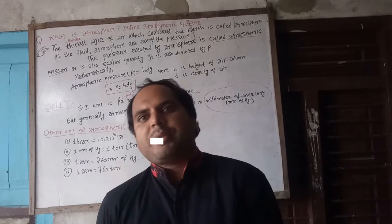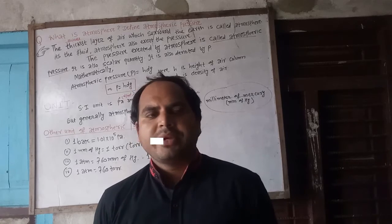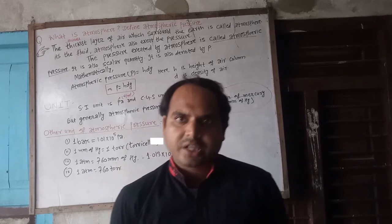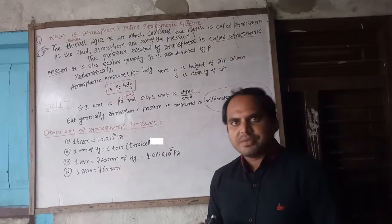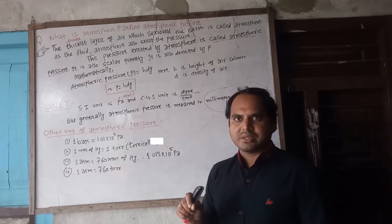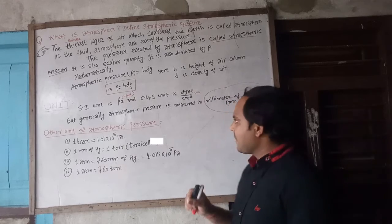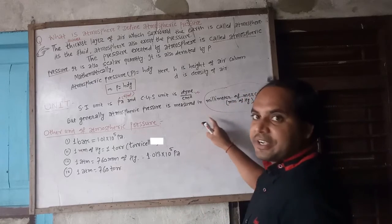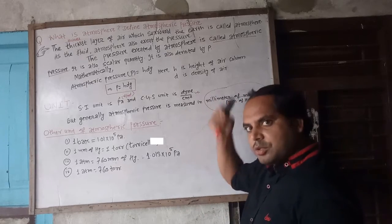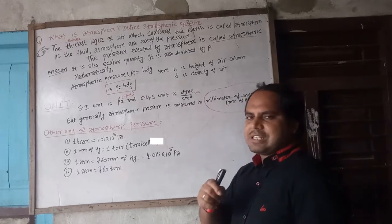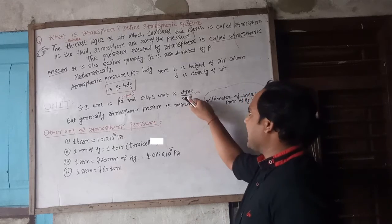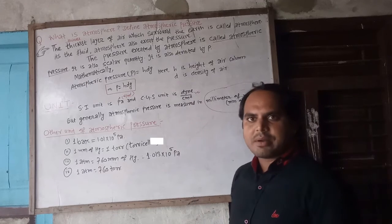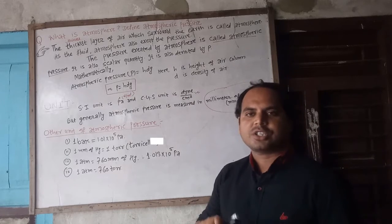For blood pressure measurement, we use millimeter of mercury. Similarly, blood pressure can be expressed in Pascal, but in practice the millimeter of mercury unit is commonly used.